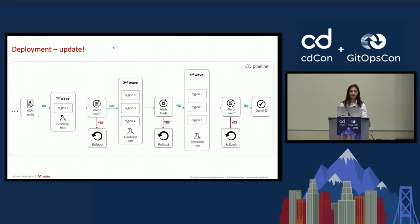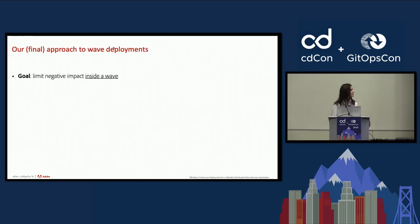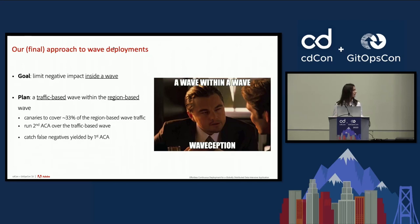The deployment process was divided into three waves, each progressively increasing in size. We conduct functional tests after a wave's regions have been upgraded to the new version, and there is a 30-minute interval monitoring for any alerts triggered following the wave rollout. If functional tests fail or alerts trigger, the pods are reverted to the previous stable version. To further limit negative impact inside a wave, we implemented a traffic-based wave in addition to the initial region-based one, directing a third of traffic to canary pods and conducting a second automated canary analysis with a larger sample size to catch any false negatives the first run might have missed.